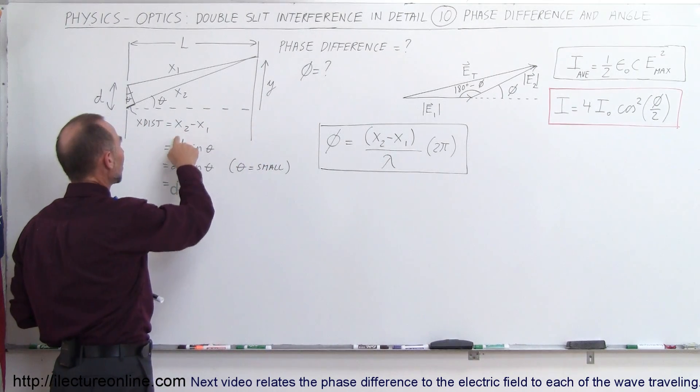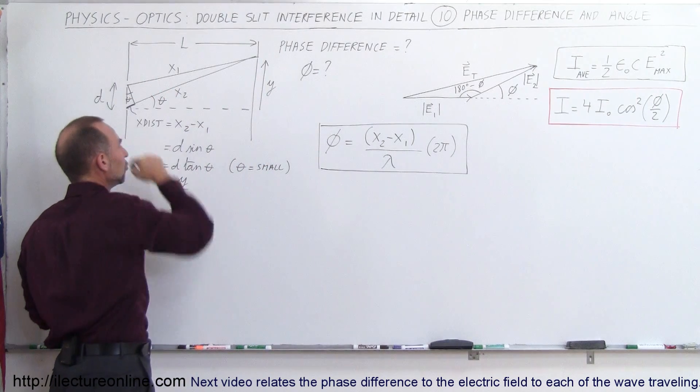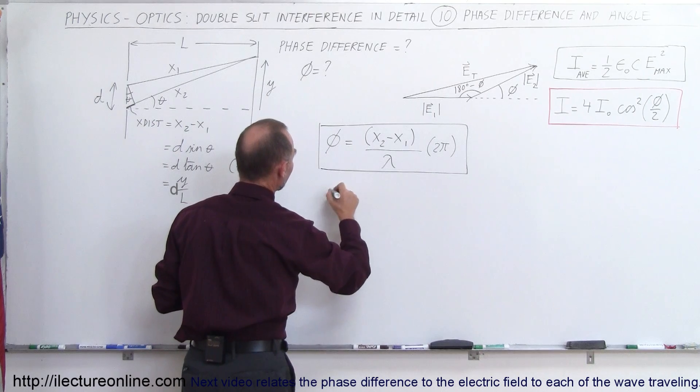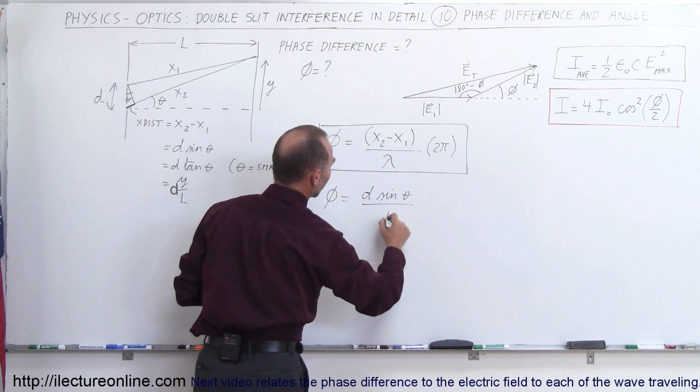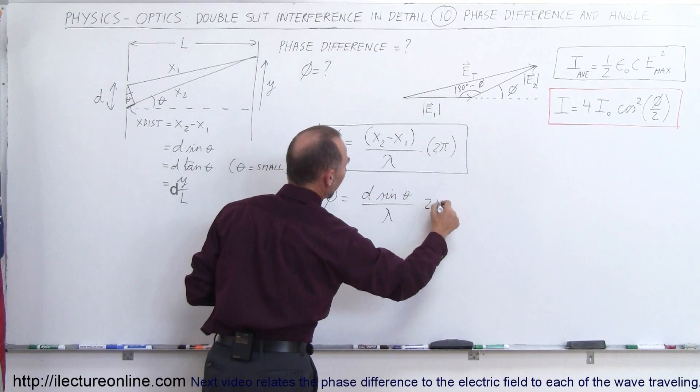And since extra distance traveled equals d sine theta, according to the geometry, we can write that the phase angle, phi, is equal to d sine theta divided by lambda times 2 pi.